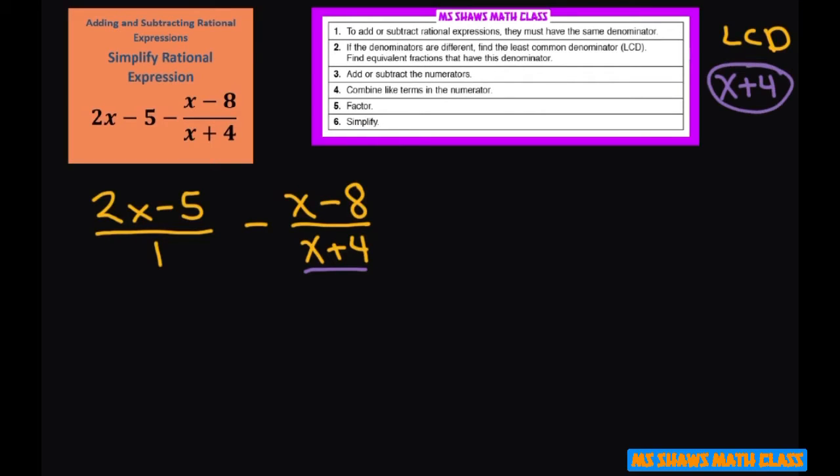All right, so we want all of this to be x plus 4. So if I want this to be x plus 4, then I have to multiply the numerator also by x plus 4 so as not to change the equation.